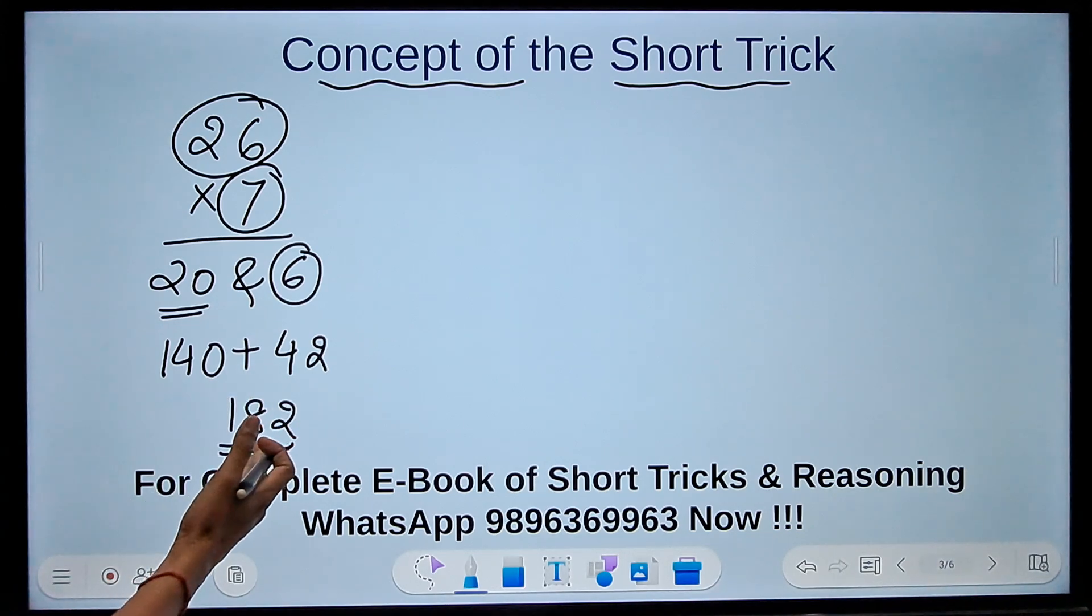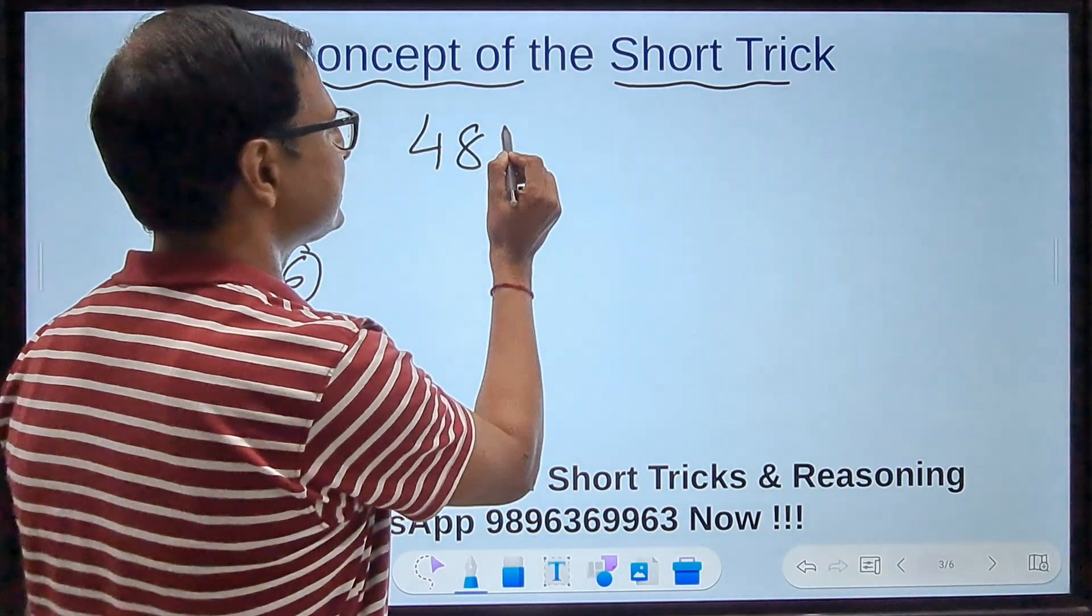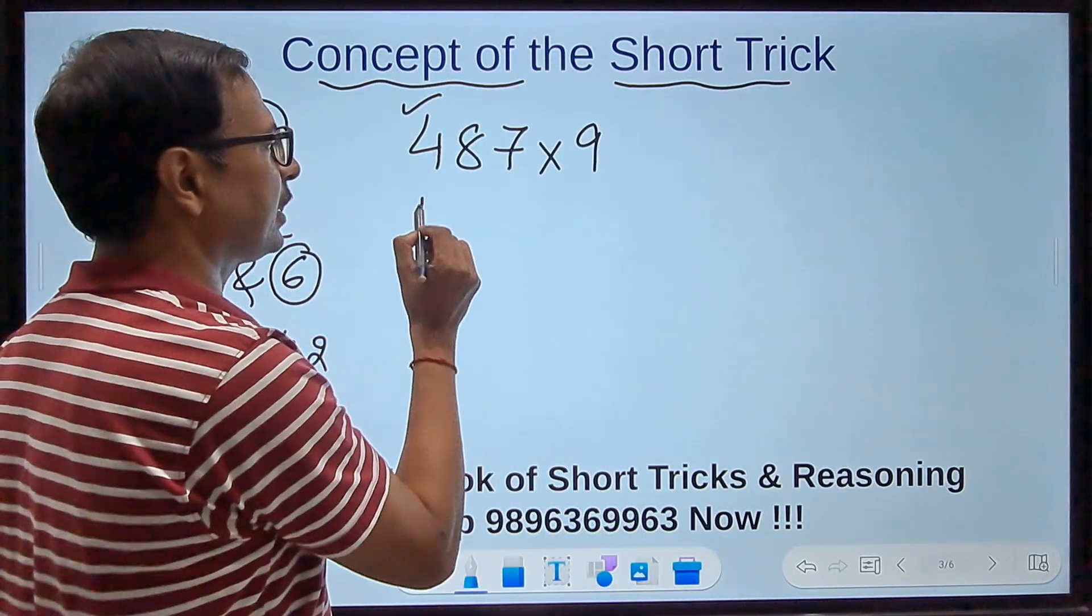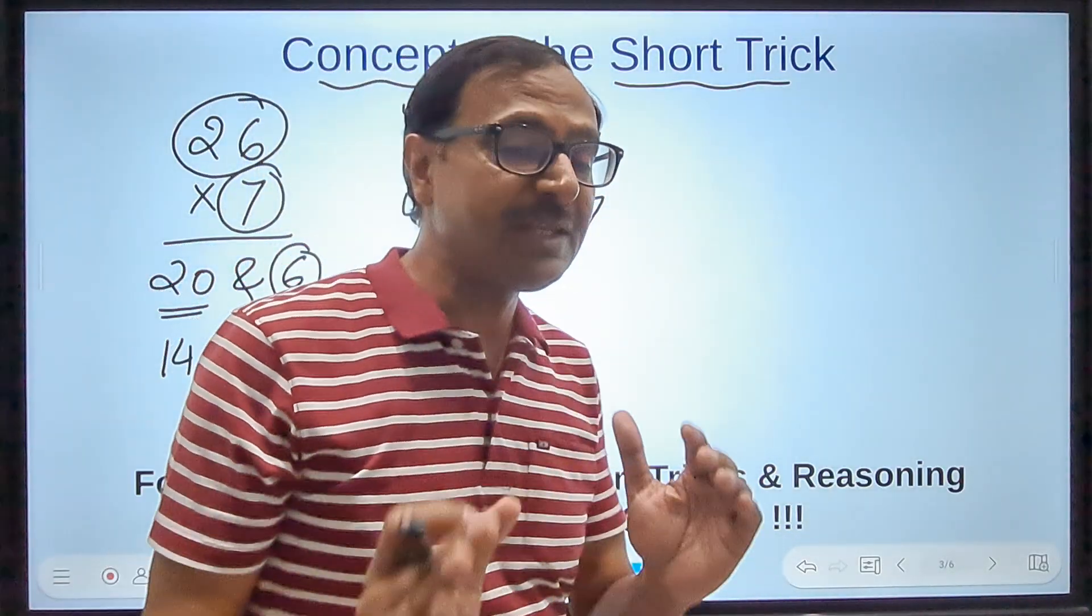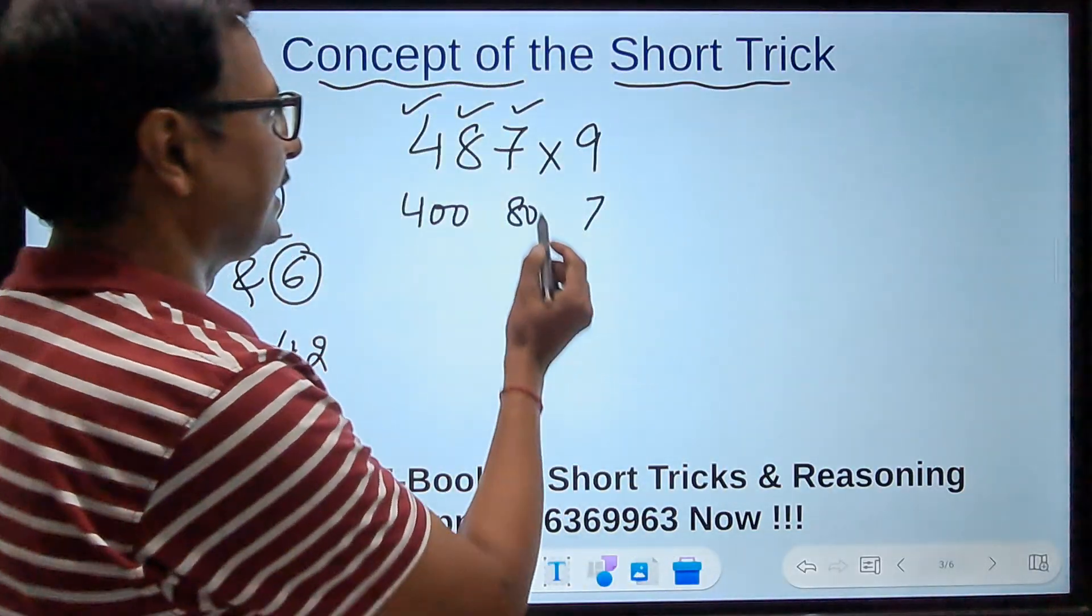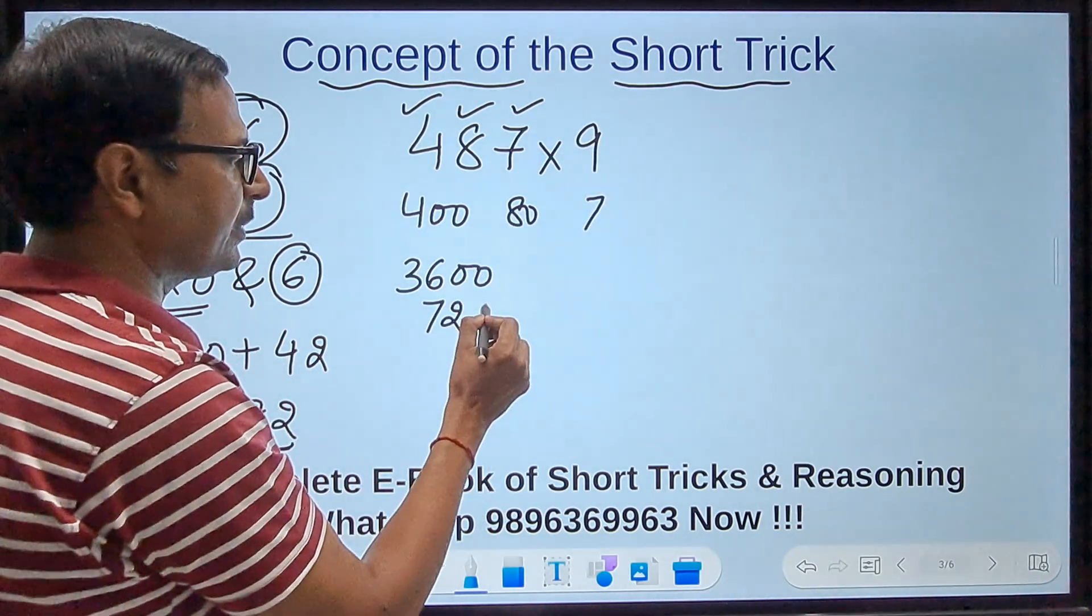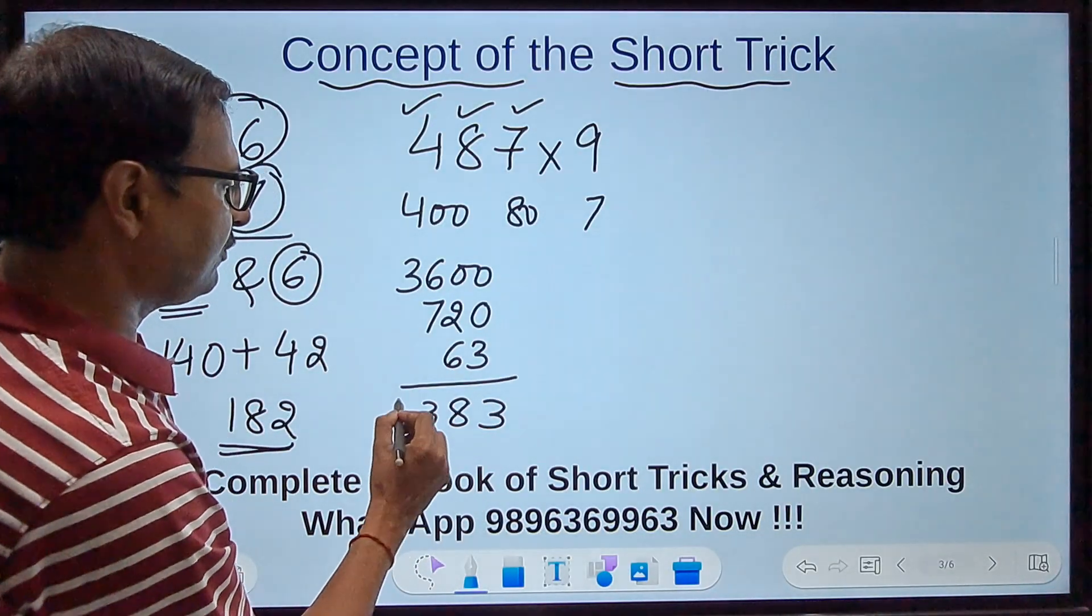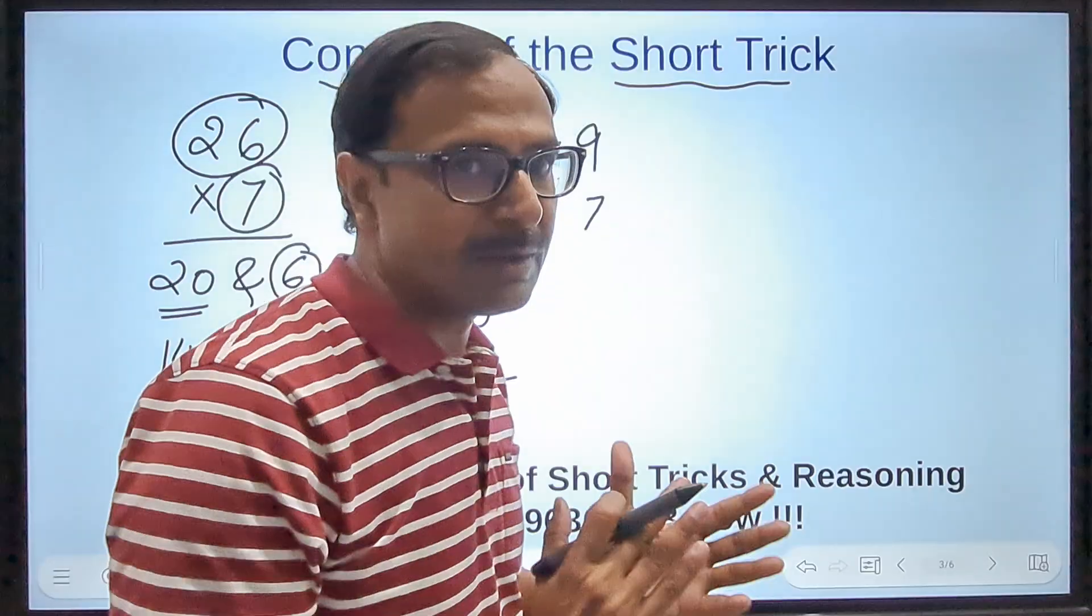Likewise, if the number gets bigger—suppose we have a number like 487 and I want to multiply that by say 9—then I have to think about this 4 as 400, then 8 as 80, and 7 as 7 itself. Then I will have three partial products. 9 times 4 we all know is 36, so it will be followed by two zeros. 9 times 8 is 72, so that will be followed by 1 zero. And 9 times 7 is 63. If I add them, I will get 4383 as the result, and that is actually the product of 487 and 9. That's how the partial product works.